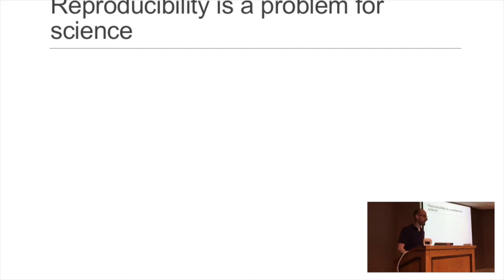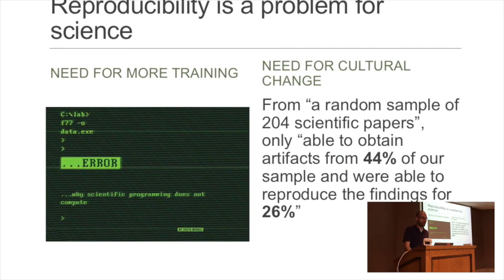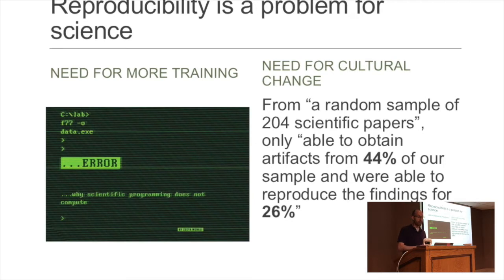Reproducibility is a problem for science — you may have seen some articles; it's made it into the popular press. One problem is a lack of training: more and more scientists are writing code but don't get any formal or informal training in best practices. It's also a cultural issue. In a recent study of 200 randomly selected studies, only a few and a half could even get the data, and overall only a quarter were actually reproducible.